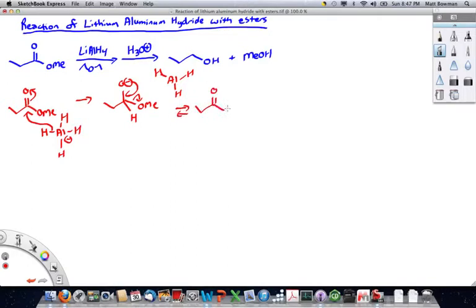And that generates an aldehyde plus methoxide. The methoxide is what ends up adding to the AlH3, and that generates this hydride.